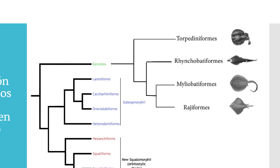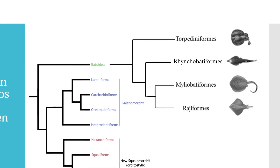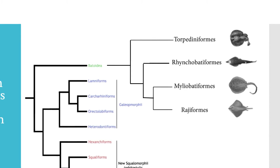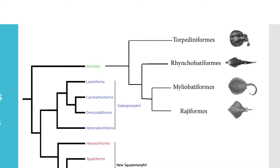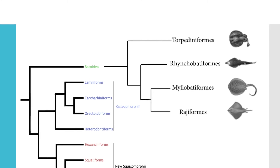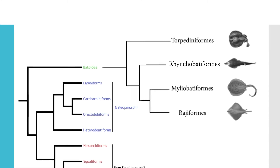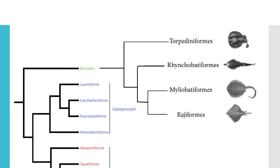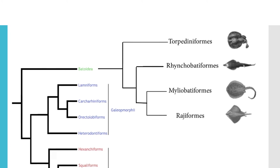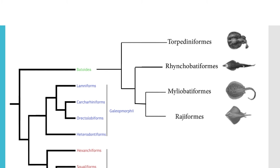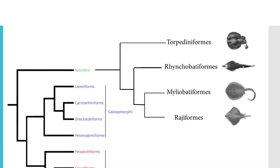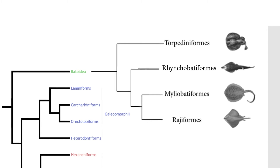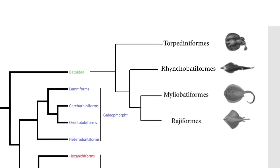Then we have the Myliobatiformes, which will be the group occupying us today, where the largest rays are grouped. Within the Myliobatiformes we have both mantas and mobulas — we'll discuss the difference between the two groups — as well as the eagle ray, and also all the stingrays of the genus Dasyatis or Hypanus, which recently also changed genus for the southern stingray Dasyatis americana in the Caribbean and Dasyatis longa for the Pacific. And finally, the rest of the rays fall under the order known as Rajiformes.